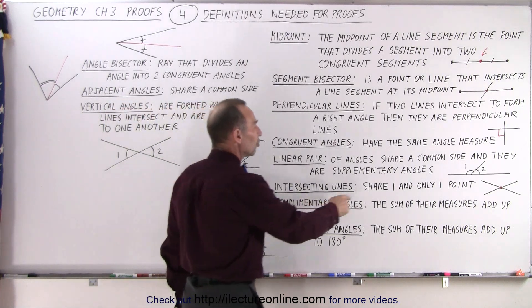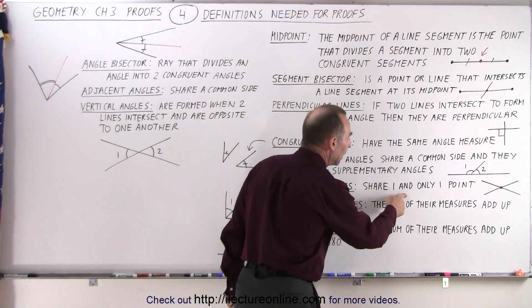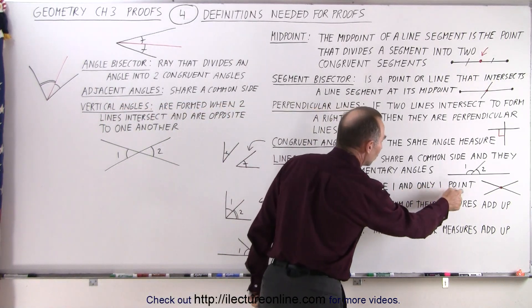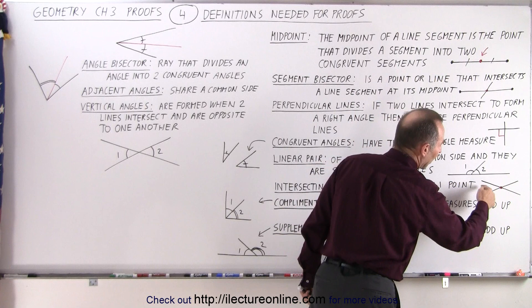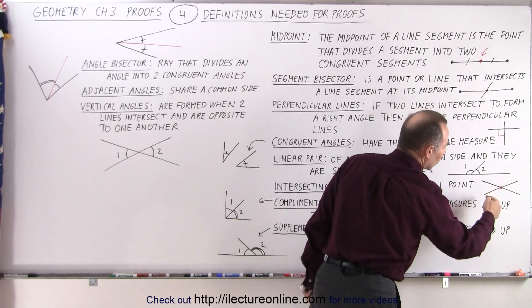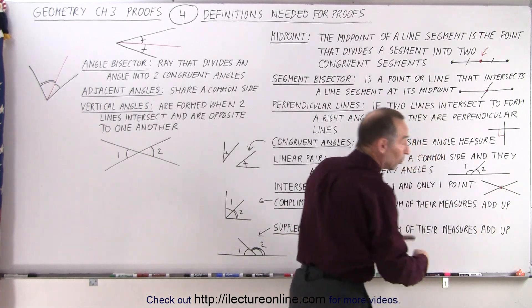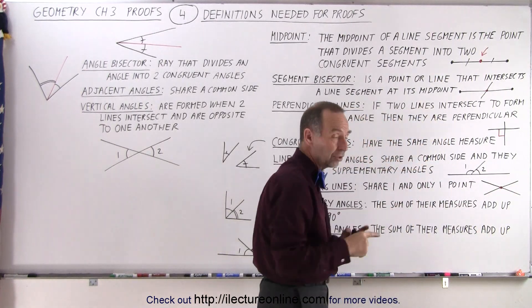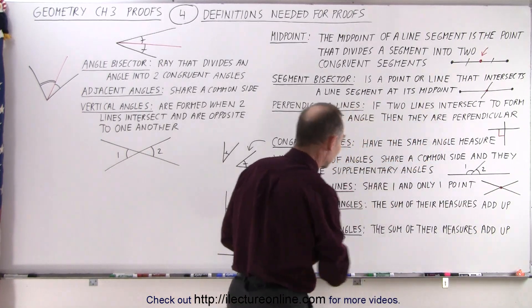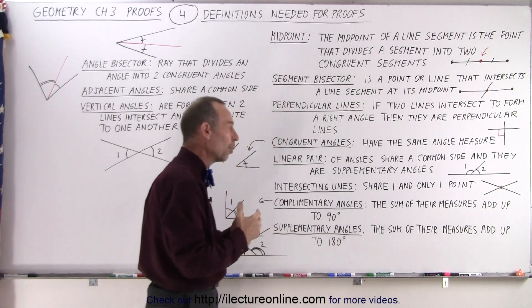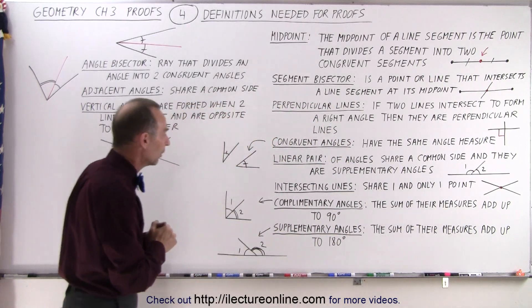Intersecting lines share one and only one point. Here is an example: two lines cross each other — that's called an intersection — and they only share a single point, not more than a single point.